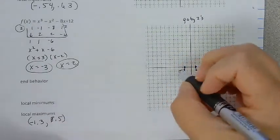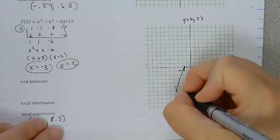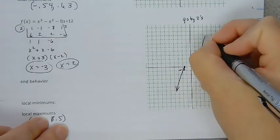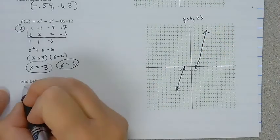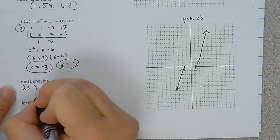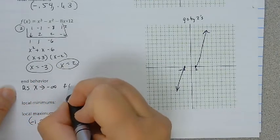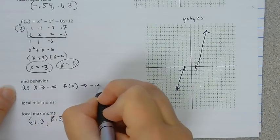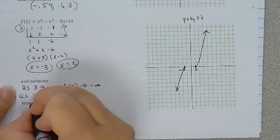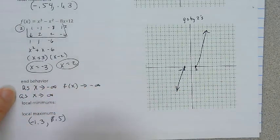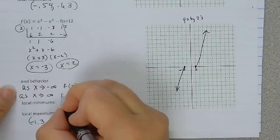So since this is an x cubed I know that it's going to go down and it's going to go up for end behaviors. So as x approaches negative infinity, f of x is going to approach negative infinity. And as x approaches infinity, f of x approaches infinity.